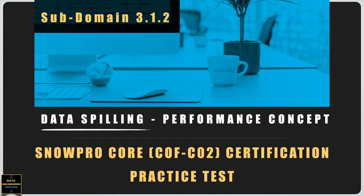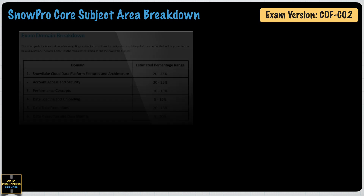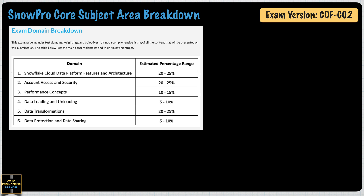When Snowflake cannot fit an operation in memory, it starts spilling data first to disk and then to remote storage. These operations are slower than memory access and can slow down query execution a lot, and that's why the new syllabus of the Snowflake SnowPro certification, also known as COF-C02, expects you to understand this data spilling concept.